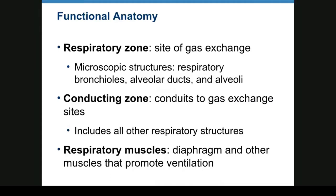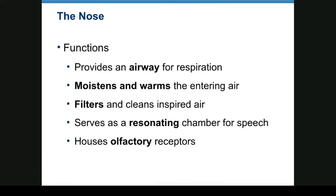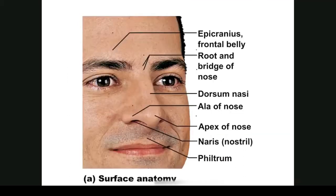We have functional anatomy. Our respiratory zone is where you have gas exchange — from the respiratory bronchioles and alveolar ducts down to the alveoli. The conducting zone just takes gas to the respiratory structures. Respiratory muscles include the diaphragm and other muscles such as the intercostals that promote ventilation. The nose provides an airway for respiration, moistens and warms air, filters and cleans inspired air, and is a resonating chamber for speech. It houses olfactory, or smell, receptors.